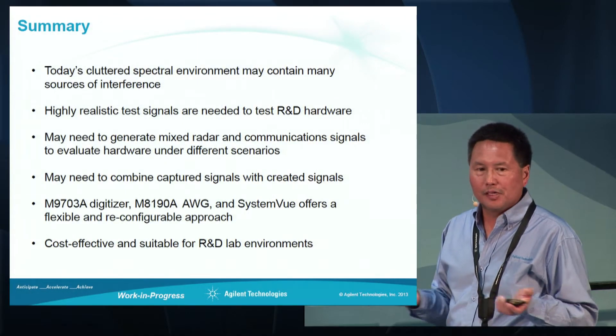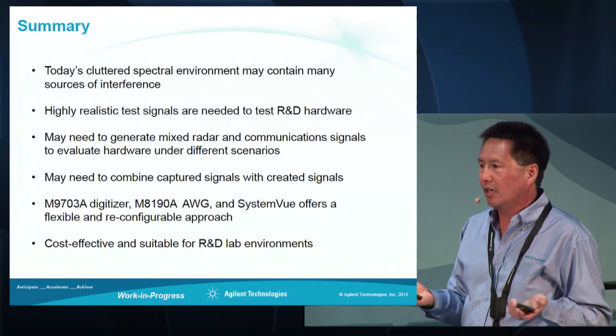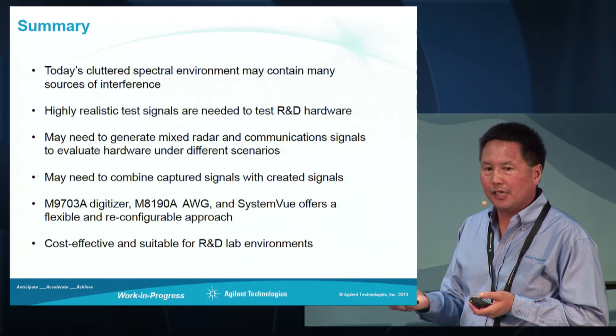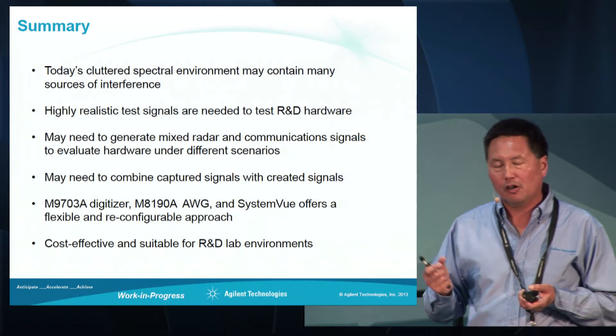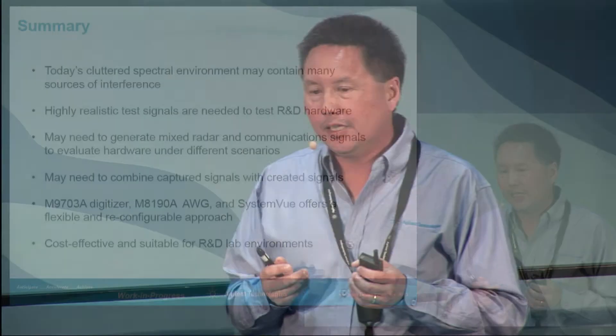In summary, today's spectrum is becoming more complex, more cluttered, with different types of signals that may be agile and dynamic — potential sources of interference once hardware is deployed in the field. What we've shown is the ability to create realistic multi-emitter test signals in the lab environment, so you can test your hardware before deployment. Another use case: if you deploy hardware in the field, find a problem with some signal scenario, you can recreate that scenario in the lab to ring out the problem and enhance your algorithms or hardware.